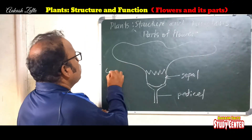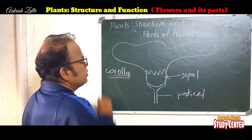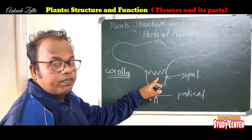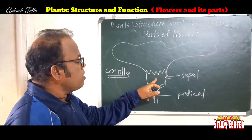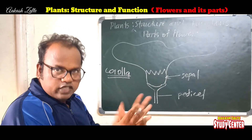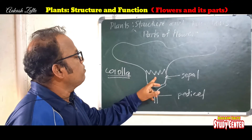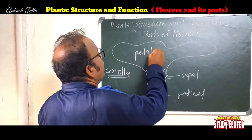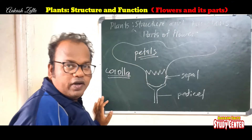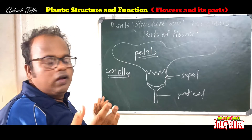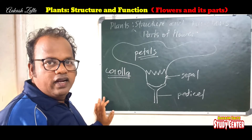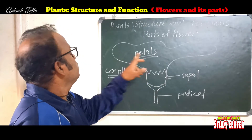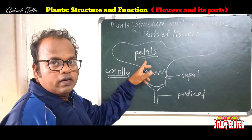This is corolla, the second part of the flower. Here is the pedicel, this is sepal which is green in color. When sepal sprouts and expands, corolla arises from the sepal. Corolla means petals, which are different in color — maybe yellow, red, etc. Petals arise from the sepal. Corolla is made up of petals.